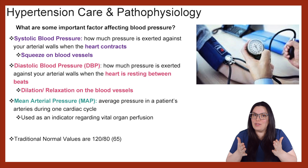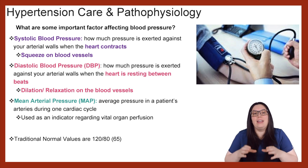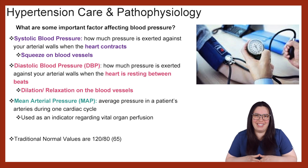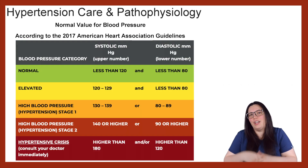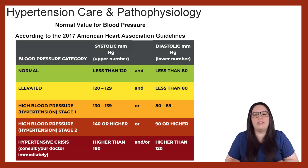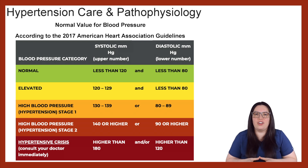As you're taking care of your critical patients, make sure that you always note the MAP being greater than 65 and your systolic being greater than 100. So let's talk about normal ranges when it comes to blood pressure. According to the 2017 American Heart Guidelines, these are what they categorize blood pressures under.